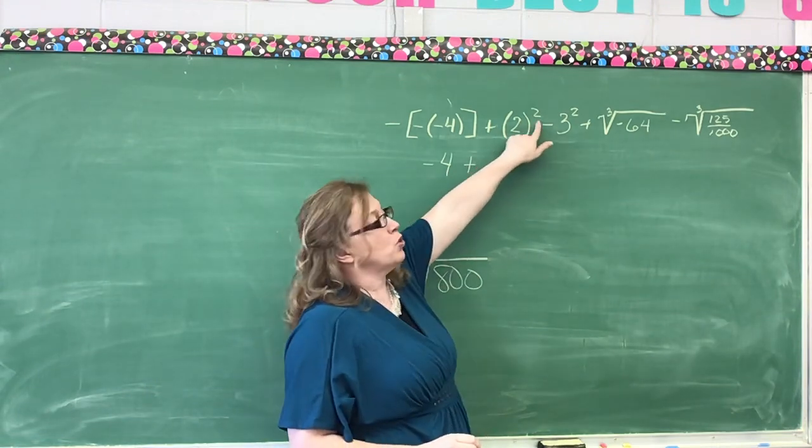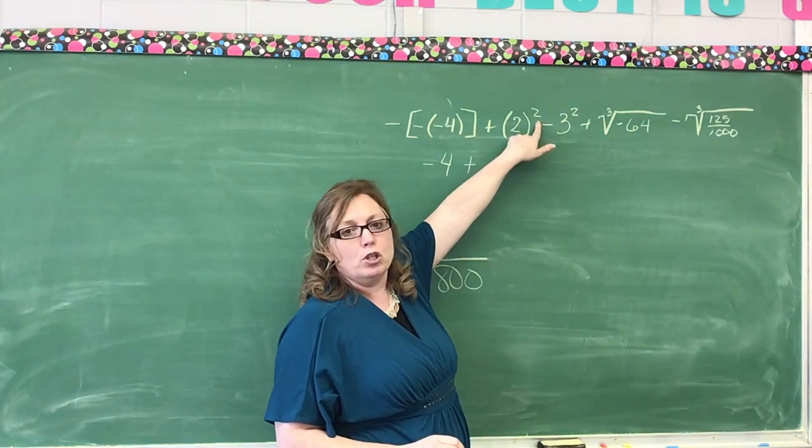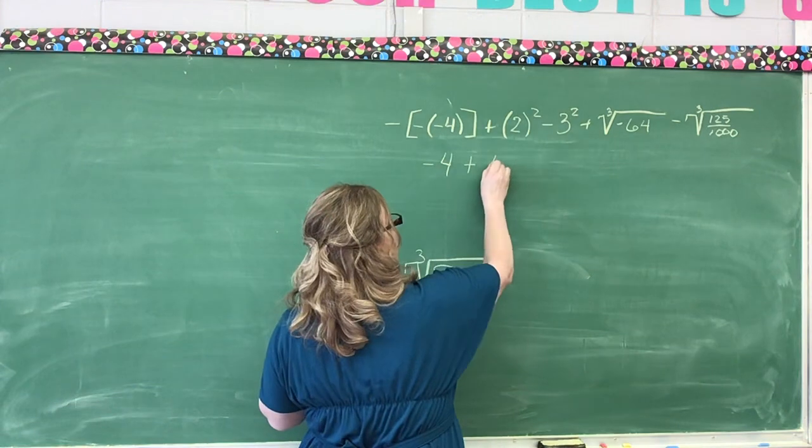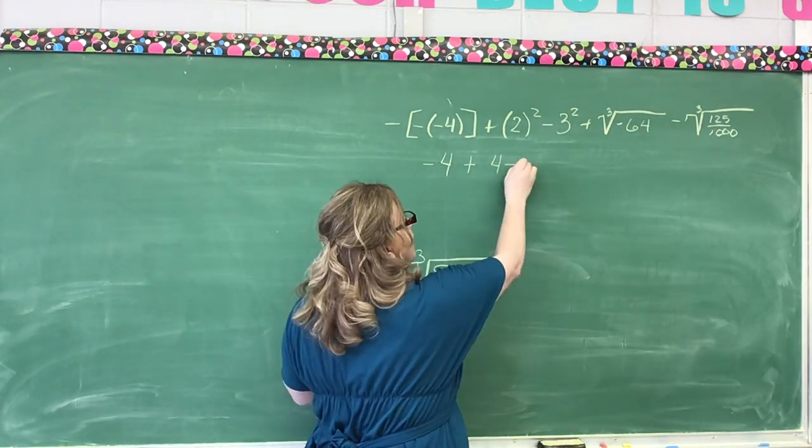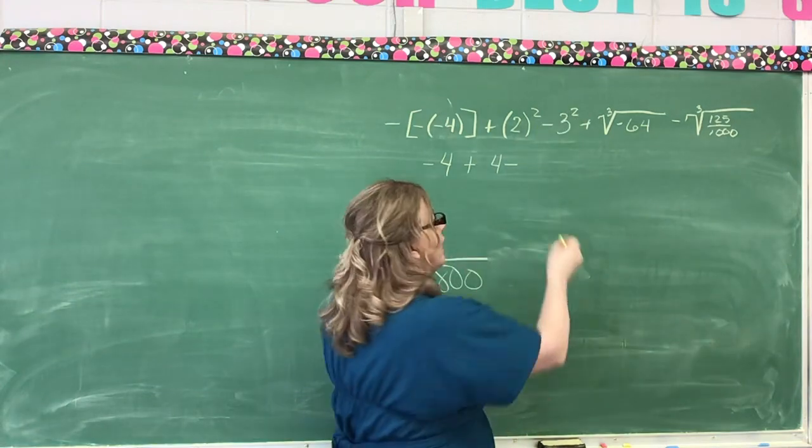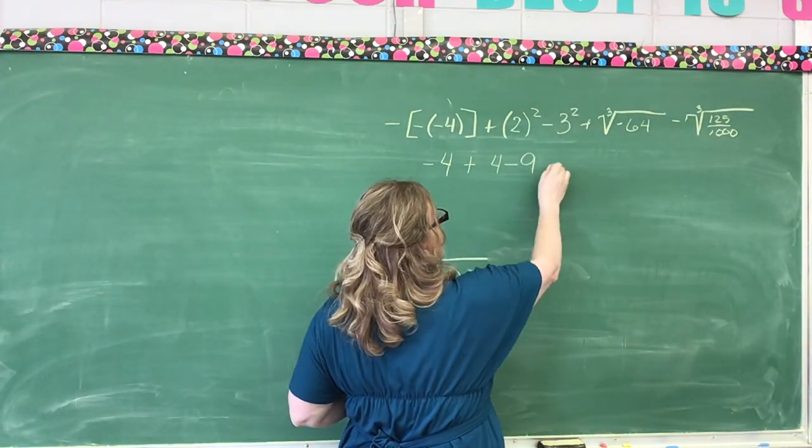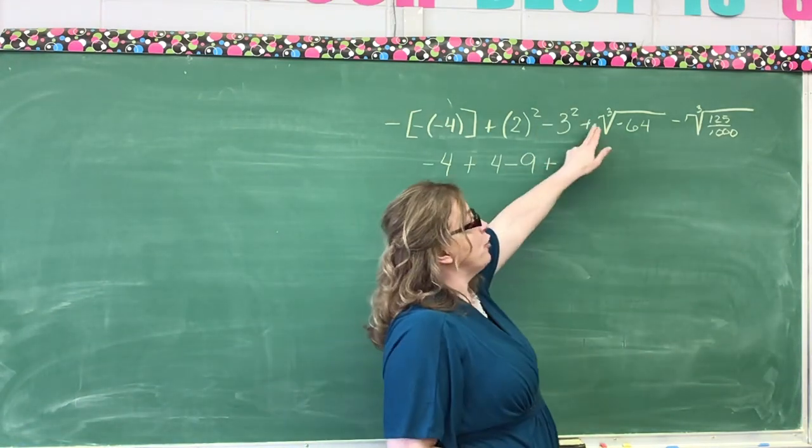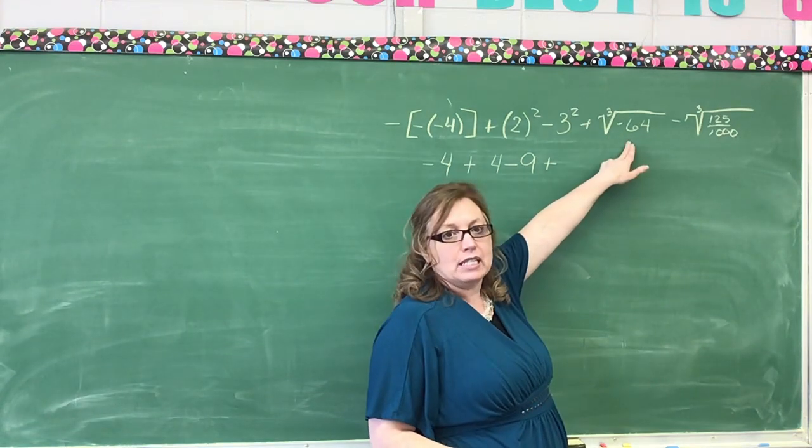Plus 2 squared. Well, 2 times 2 is 4. Then we have minus 3 squared. 3 times 3 is 9.